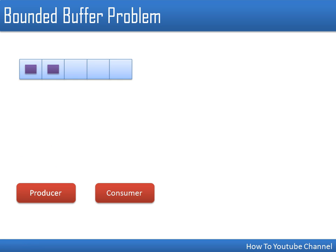The constraint which we need to impose in the solution of the bounded buffer problem is that the producer cannot put new data if the buffer is full, and at the same time the consumer cannot access any data if the buffer is empty.